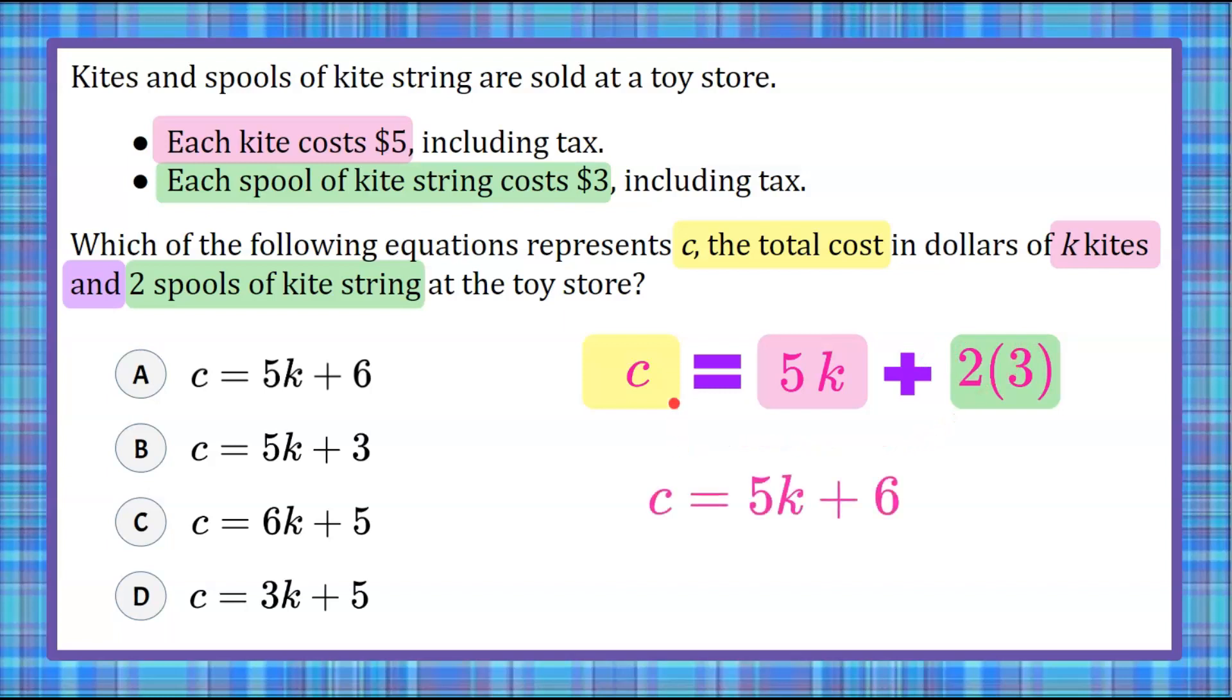So let's rewrite this. So we have c equals 5k, add six. The product of two multiplied by three is six. So now if we knew the number of kites we were purchasing,